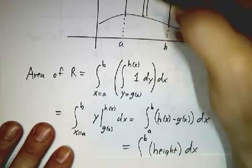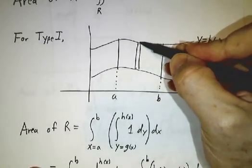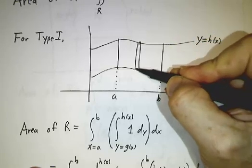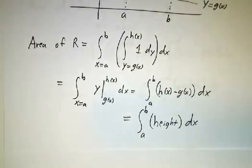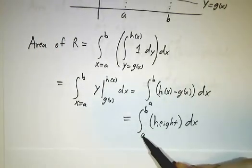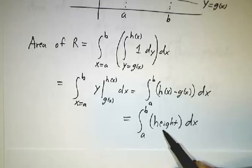And that's just the height of the column. The height of the column is the position at the top minus the position at the bottom. The height is h minus g. So we've gotten that the area of R is the integral from a to b of the height dx.